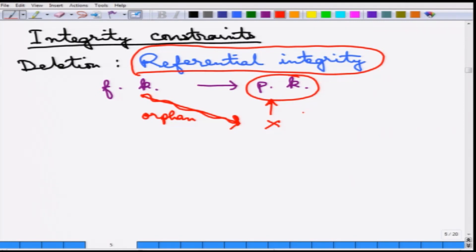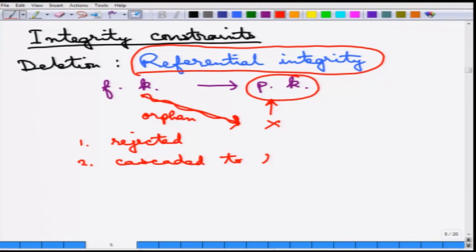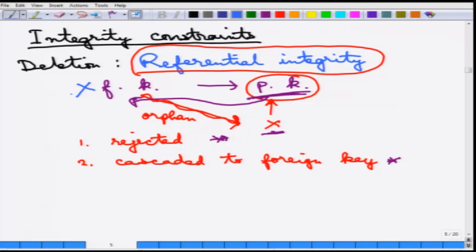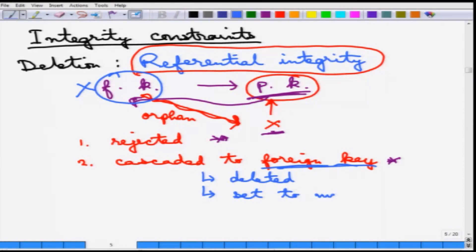If a deletion of a primary key is requested, there are two options: first, the operation is simply rejected; second, the deletion is cascaded to the foreign key. In the cascaded case, if a primary key is deleted, the corresponding foreign key tuples that refer to it are also deleted from the referencing relations. As part of foreign key cascading, the entire tuple can be deleted, or the foreign key may be set to null.